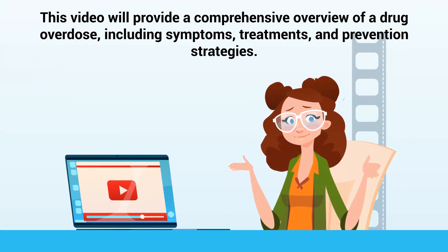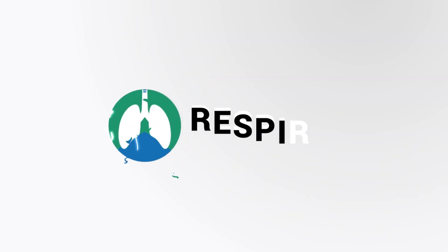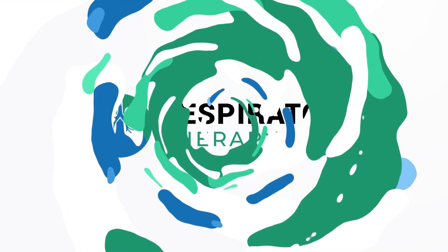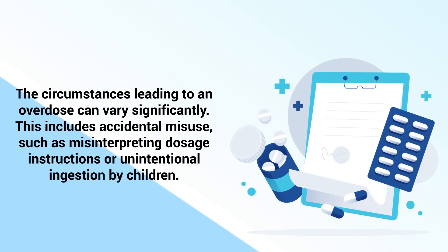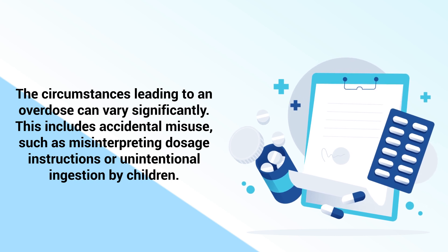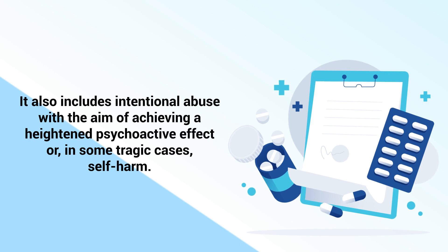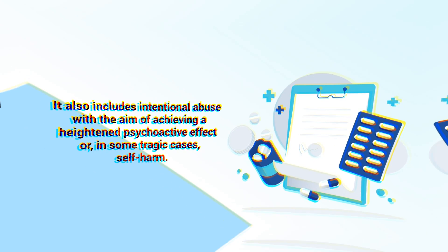This video will provide a comprehensive overview of a drug overdose, including symptoms, treatments, and prevention strategies. The circumstances leading to an overdose can vary significantly. This includes accidental misuse, such as misinterpreting dosage instructions or unintentional ingestion by children. It also includes intentional abuse with the aim of achieving a heightened psychoactive effect or, in some tragic cases, self-harm.